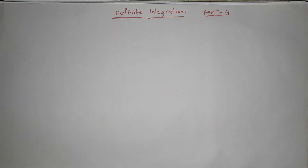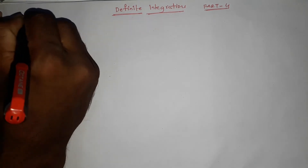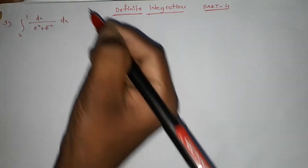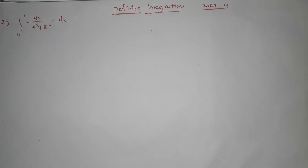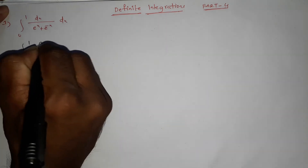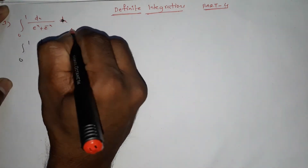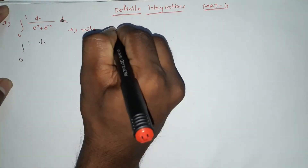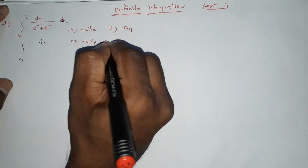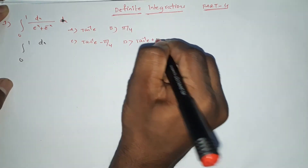Next question — first question, part 4. Integration of 0 to 1, dx by (e power x plus e power minus x). Options: Option A is tan inverse e. Option B is pi by 4. Option C is tan inverse e minus pi by 4. Option D is tan inverse e plus pi by 4.